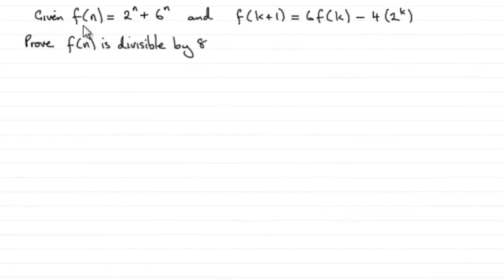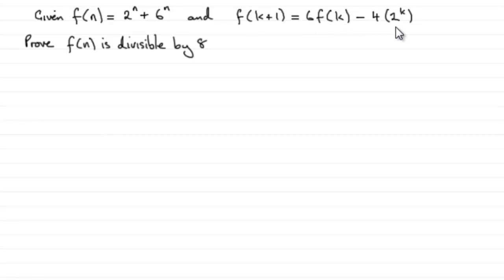We already know that f(n) = 2^n + 6^n, and we proved in an earlier part that f(k+1) = 6f(k) - 4 × 2^k. We've got to prove that f(n) is divisible by 8.